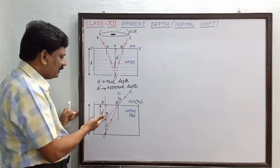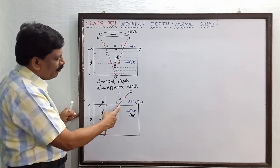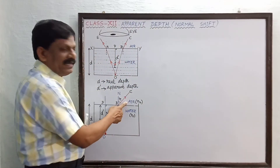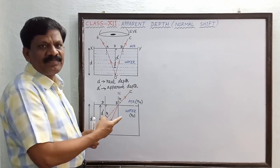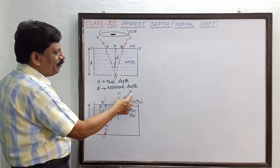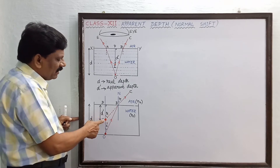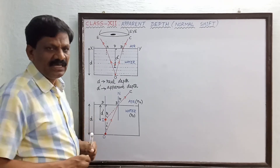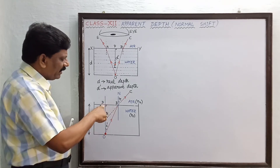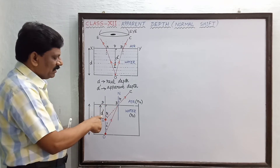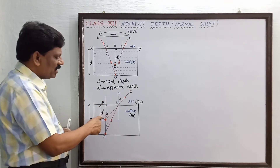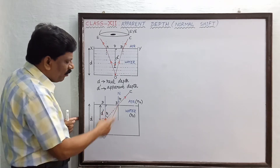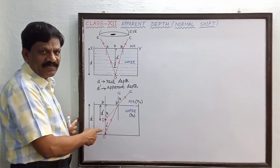In the enlarged diagram, O is the point object at the bottom of the water tank and I is the image formed above the bottom. The incident ray OB travels inside the denser medium (water) and deviates along BC in the rarer medium (air). Extending ray BC backward by a dotted line, it meets the normal OD at point I. The distance from I to point D on the surface is the apparent depth d', and O to D is the real depth d. The incident ray OB makes an angle of incidence i with the normal.